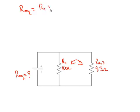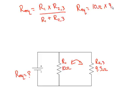So R equivalent equals R1 times R2.3 divided by R1 plus R2.3. So R equivalent equals 10 ohms times 9.3 ohms divided by 10 ohms plus 9.3 ohms.